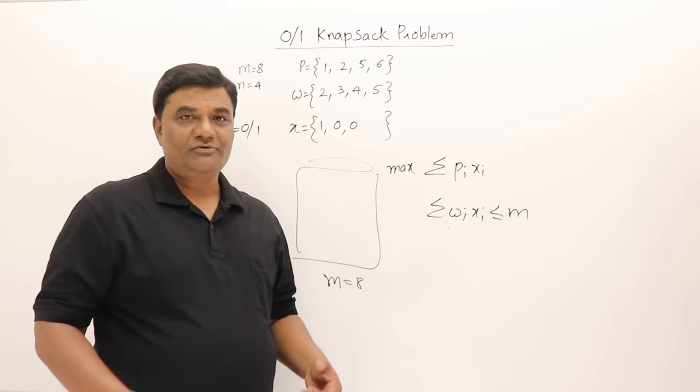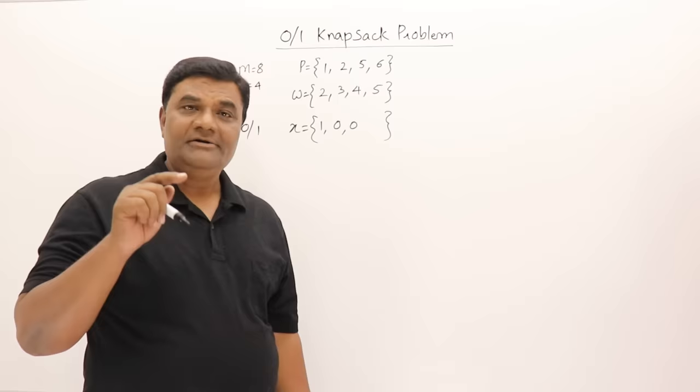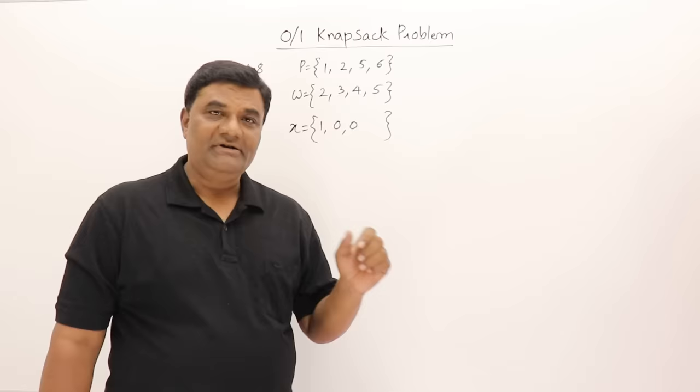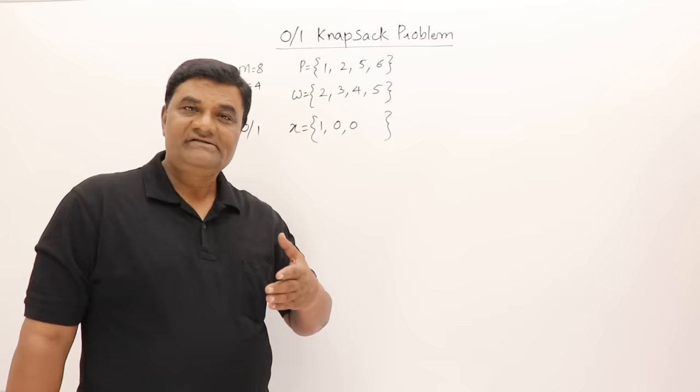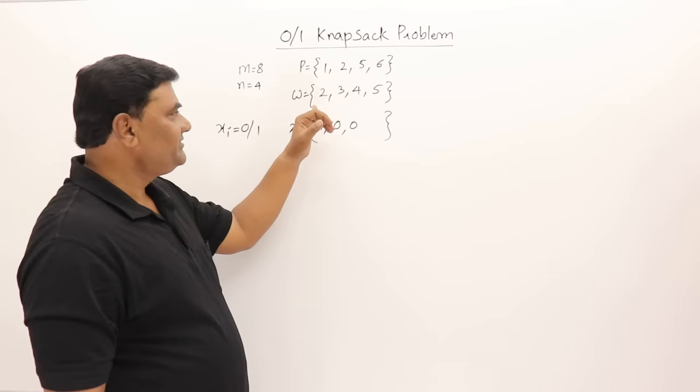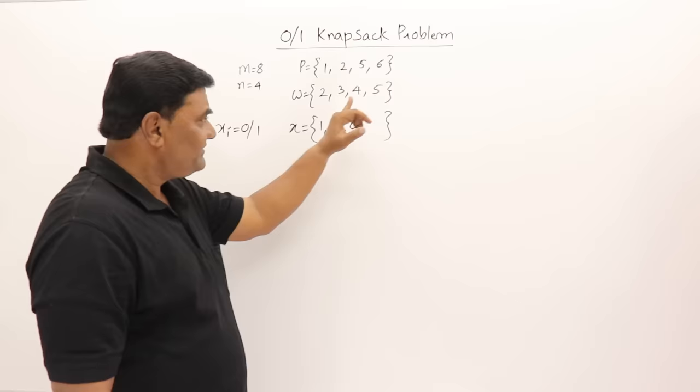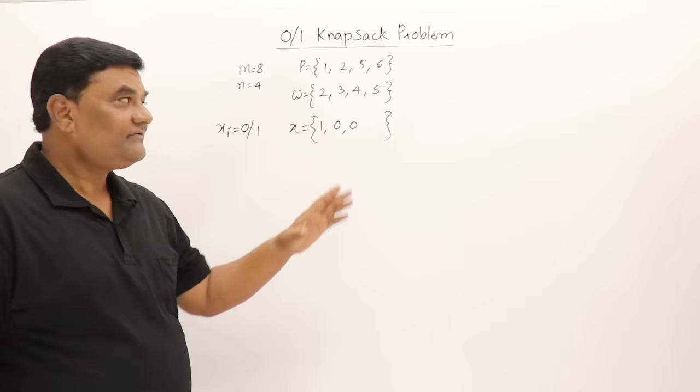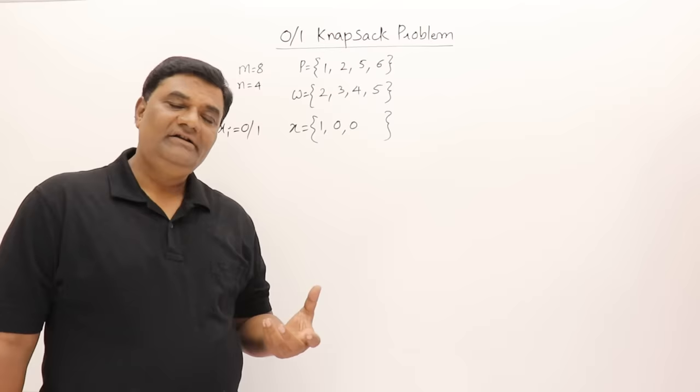Now let us understand the dynamic programming approach. Dynamic programming is useful for solving optimization problems — yes, this demands maximum results, so it is an optimization problem. Second, dynamic programming says a problem should be solved as a sequence of decisions. For every object we can decide: include or not include. We usually take decisions from the last object towards the first object.